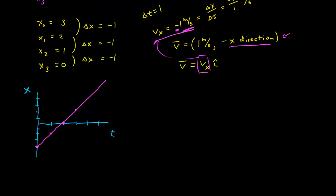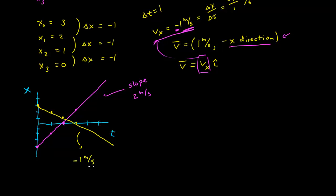We can graph the second example as well: at t equal to 0 x is 3, at t equal to 1 it's 2, at t equal to 2 it's 1, and at t equal to 3 it's 0. Again, it plots out a straight line. We can look at the slopes of these lines: the slope of the first line is 2 meters per second, and the slope of the second line is negative 1 meters per second. So you can immediately see that the slope of the line on the position versus time graph gives us the velocity. These lines are a graph of the trajectory of the particle.